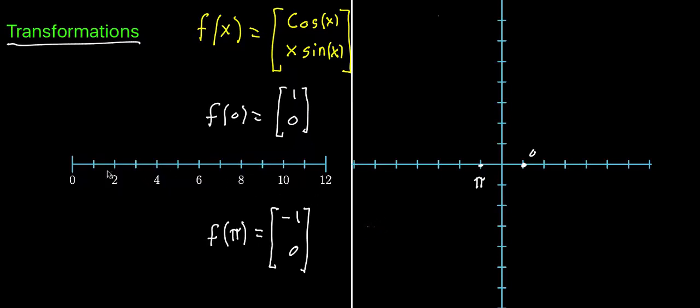If we watch this take place and actually watch each element of the input space move over to the output space, we get something like this.